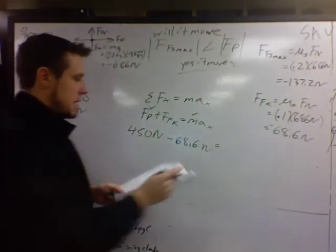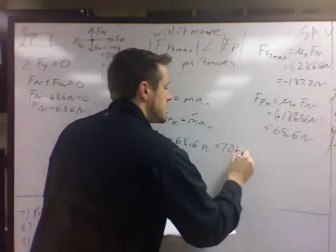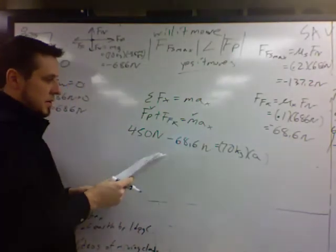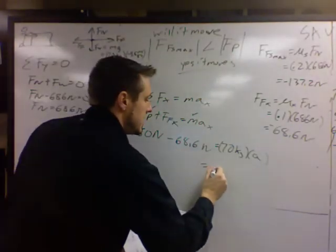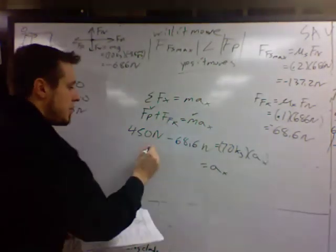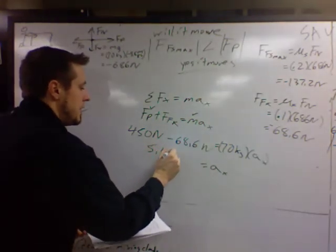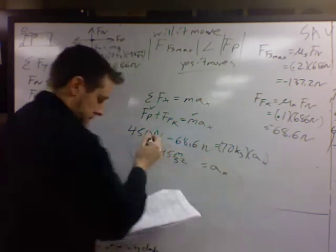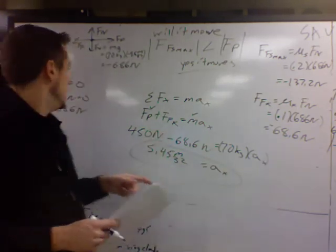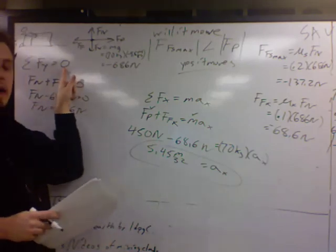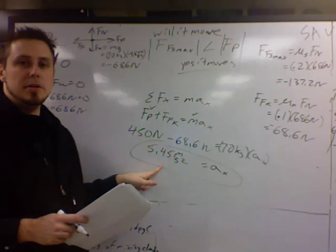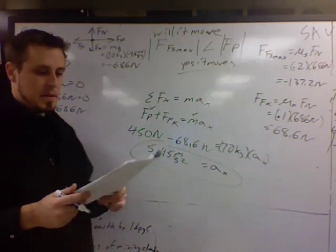Equals the mass, which was given as 70 kilograms times the acceleration. And you solve that. You'll get an acceleration in the x direction of 5.45 meters per second squared. Obviously, the acceleration in the y direction is 0, because of what we said way back here. So this is it for the acceleration. 5.45 meters per second squared. That's it.